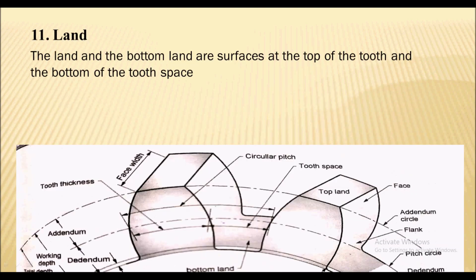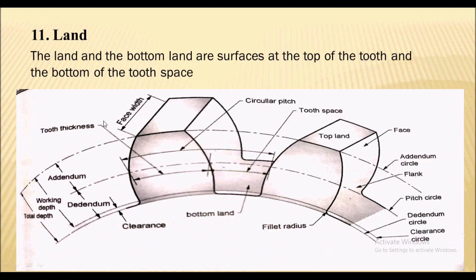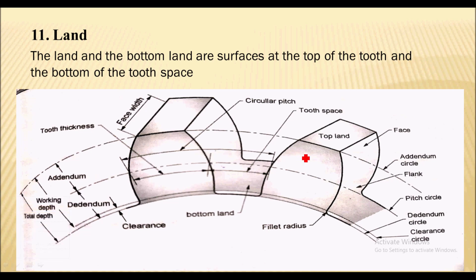Next term is the land. There are two lands in this gear: the top land and the bottom land. The top surface is called the top land and the bottom surface of the gear is called the bottom land.